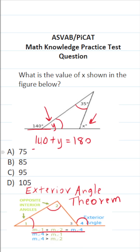To get y by itself, we're going to subtract 140 from both sides. This gives us y equals 180 minus 140, which is 40. So we know the measure of angle y is 40 degrees.